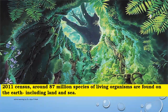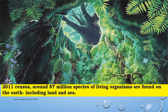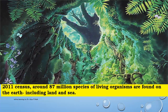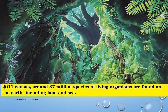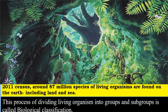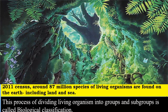In the 2011 census, around 87 million species of living organisms are found on the earth, including land and sea. To know all the plants and animals around us, we need to identify them and put them in groups. This process of dividing living organisms into groups and subgroups is called biological classification, and we also need to know their similar characters and their differences.